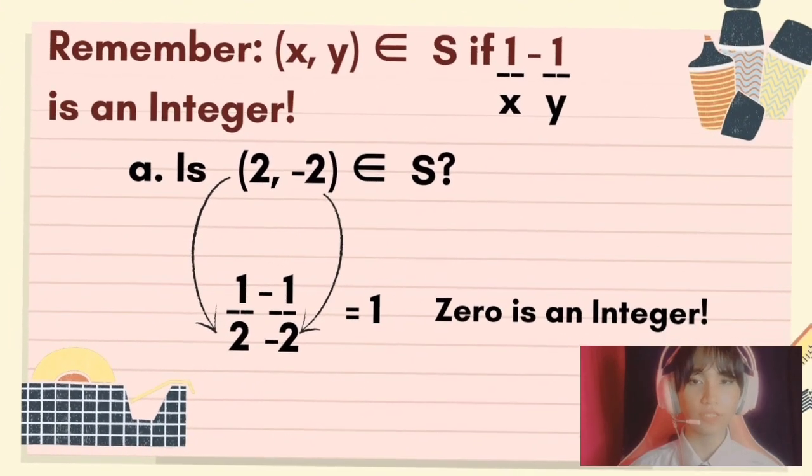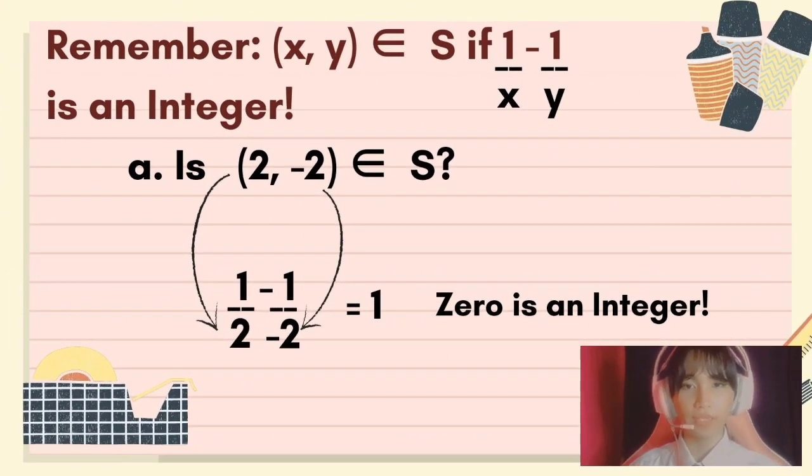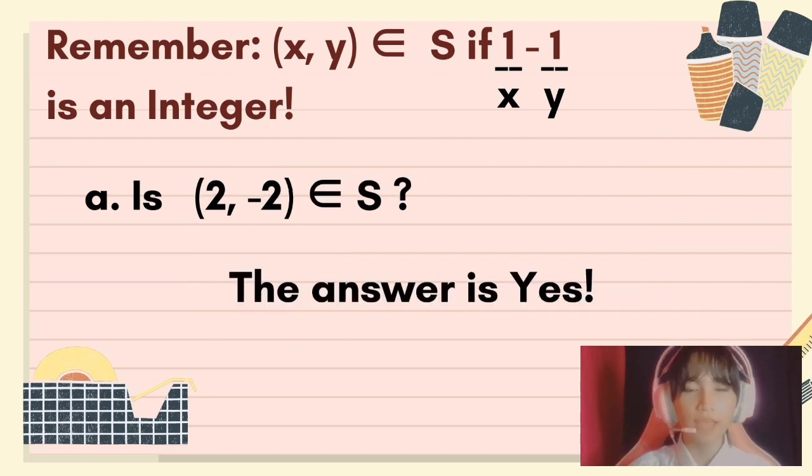Now, for the last question for item A, the X and Y values are 2 and negative 2. So 1 half minus 1 over negative 2, the answer is 1, and 1 is also an integer. So the answer is yes, 2 and negative 2 is an element of set S.